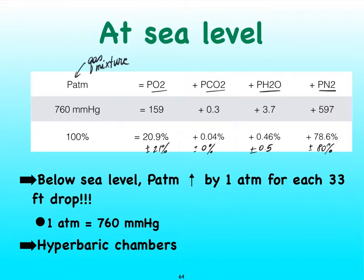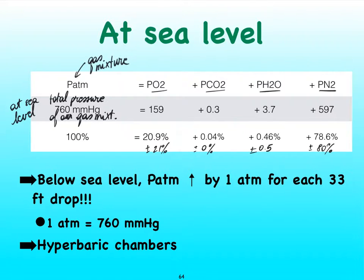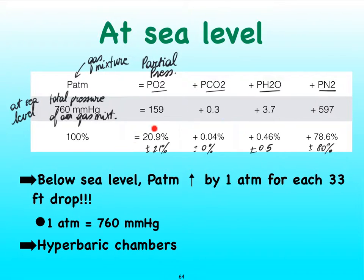At sea level, the total pressure of our gas mixture is, as you know, 760 millimeters of mercury. If we take a look at the individual partial pressures of each gas — PO2 refers to the partial pressure of oxygen — we see it's about 160 for oxygen, almost zero for carbon dioxide, almost four for water, and almost 600 millimeters of mercury for nitrogen. These numbers reflect those percentages.